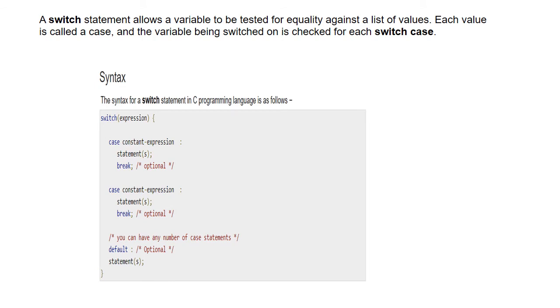A switch statement allows a variable to be tested for equality against a list of values. We compare a variable to different cases, and the exact match will be executed. Each value is called a case, and the variable being switched on is checked for each switch case. If we look at the syntax of the switch statement in C programming language: first, we write switch which is a keyword, and the expression or variable that we have to match the value.